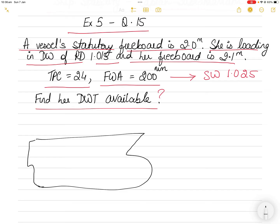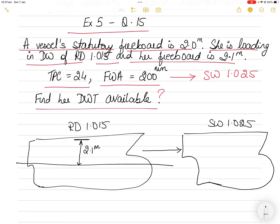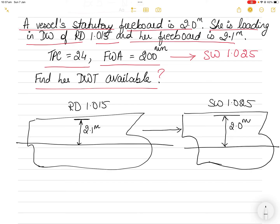Your vessel is in relative density 1.015 with a freeboard of 2.1 meters from the deck line to the water level. From here, you will be going into seawater density of 1.025, where your freeboard is 2 meters—that is your statutory freeboard in seawater 1.025.